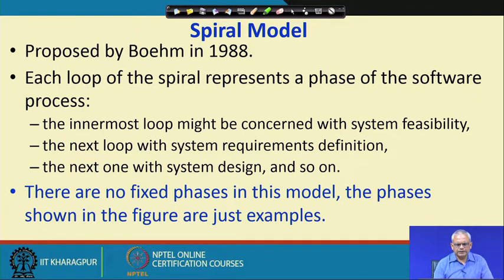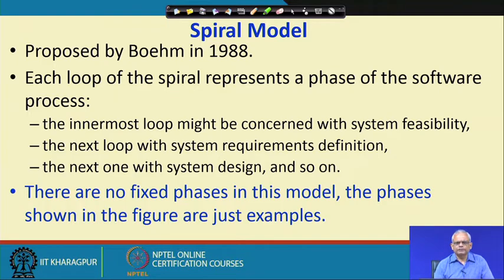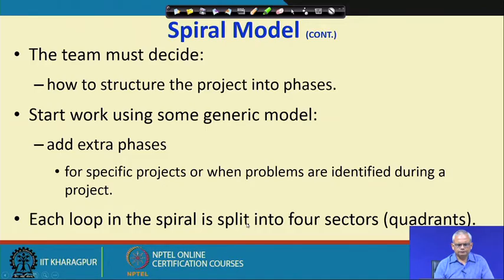One important thing about the Spiral Model is that each loop, called a phase, may not result in deliverable software, whereas in the incremental model every increment leads to a deployable increment at the customer site. There are no fixed phases in this model — the phases are determined by the project manager and team members as development proceeds. The number of phases are decided by the team, and in each phase some risk is identified and resolved using a prototype.